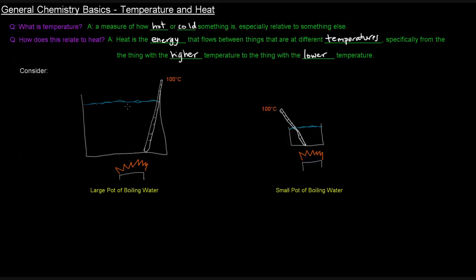Now I want you to consider something. Imagine a large pot of boiling water and a small pot of boiling water. Water boils, assuming we're at standard pressure which is one atmosphere, water boils at a hundred degrees Celsius. So if this water is boiling and this water is boiling, they're both at a hundred degrees Celsius. They're at the same temperature.